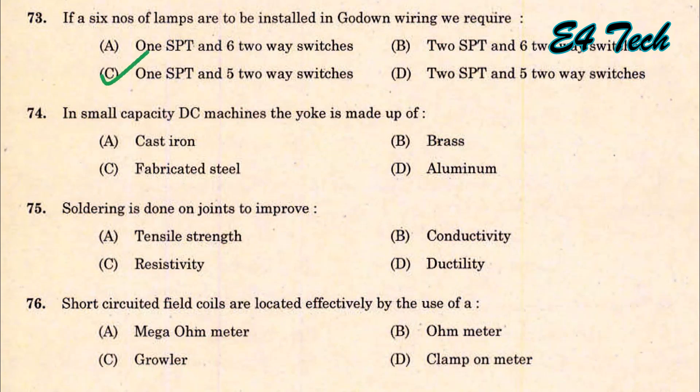In a small capacity DC machine, the yoke is made up of cast iron — that is option A. Soldering is done on joints to improve conductivity. That is option B.